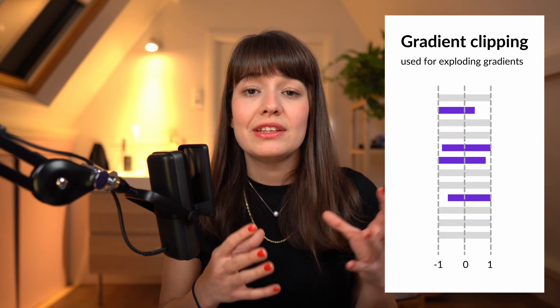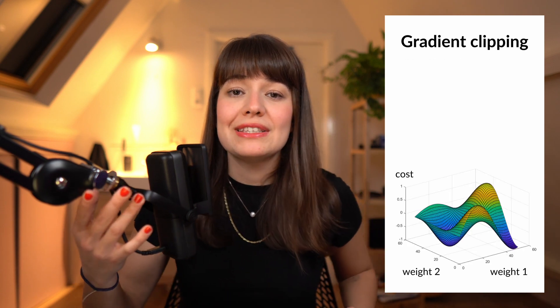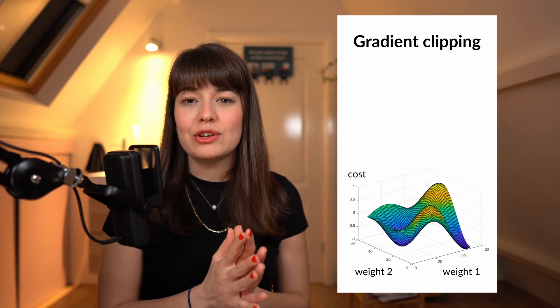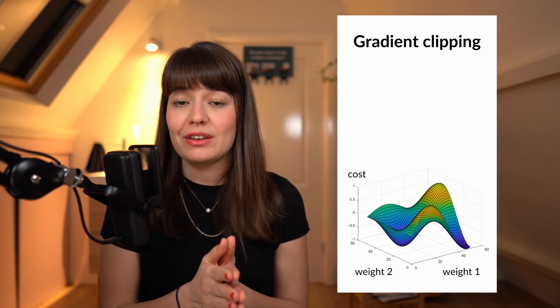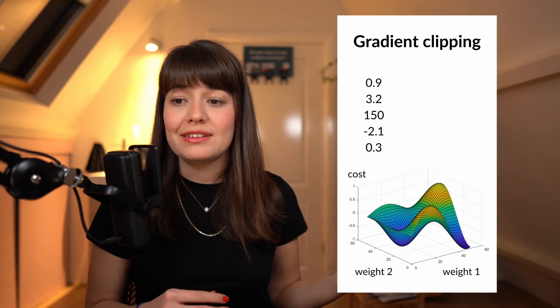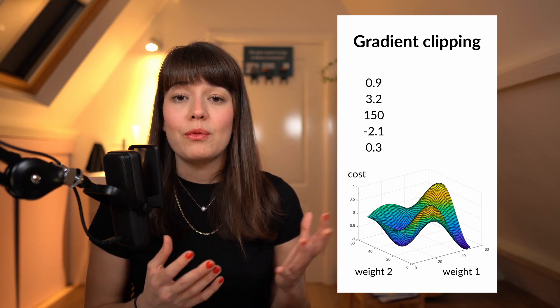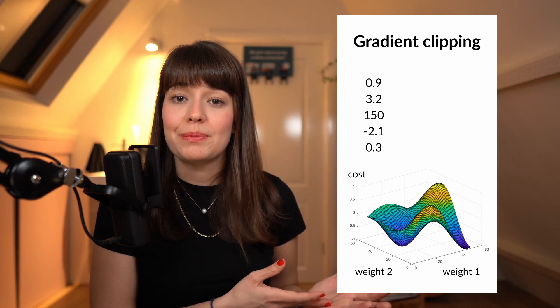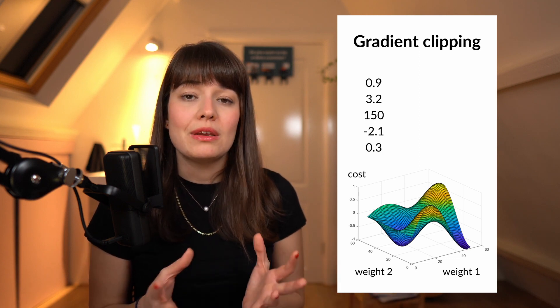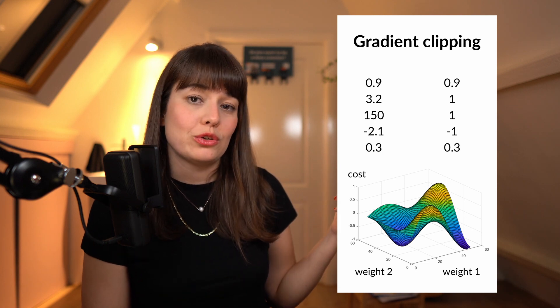The tricky part is that when you clip some of the gradients and not others, the direction of your gradient is going to change. For example, let's say we have a gradient vector like this: 0.9, 3.2, 150, minus 2.1, and 0.3. If you apply gradient clipping, you're going to clip the values higher than 1 and lower than minus 1, bringing them to 1 and minus 1 respectively. So in the original vector's direction, the graph was going to look one way, but after clipping, your vector is going to be pointing in a completely different direction.